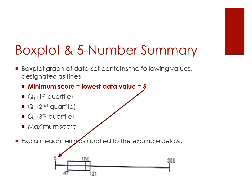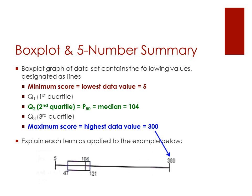The minimum score is the lowest value in the data set. Here we can see that five would be the minimum score. The second quartile is P50 — that's the same thing as your 50th percentile and it's the median. In this case it's 104. The maximum value is the highest value, which in this data set is 300.